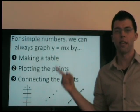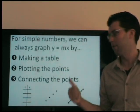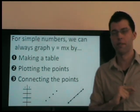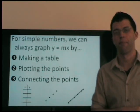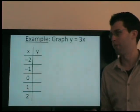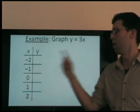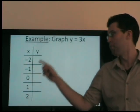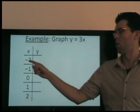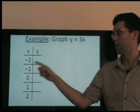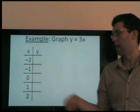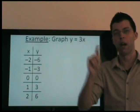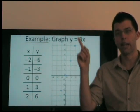One way is to follow these three steps: Step 1, make a table; step 2, plot the points; and step 3, connect them. For example, for y equals 3x, we pick simple numbers for x and multiply them by 3 — negative 2 times 3, negative 1 times 3, and so on. We have our points, now we plot them, and step 3 we connect.